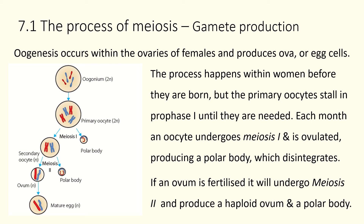If the egg is fertilized, it will undergo meiosis two and produce a haploid ovum and a polar body. Because it's fertilized, it will then mature into an egg. So from one diploid cell originally, the end result is only one haploid sex cell — one ovum — and that only happens if it is fertilized.